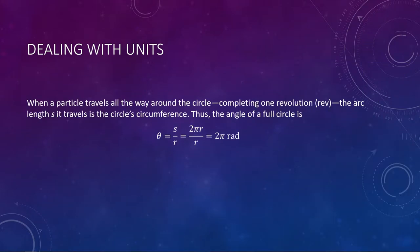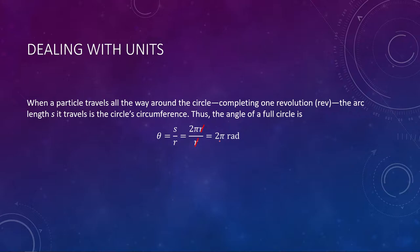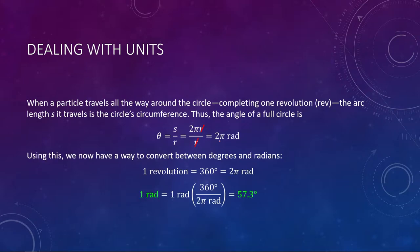Think about what happens if you travel all the way around a circle — that is 360 degrees, completing one revolution. In our equation, angular position is s over r, so the arc length when going all the way around is the circumference, 2πr. Notice the r cancels out, so if we go all the way around a circle, that equals 2π radians. A full circle is either 360 degrees or 2π radians.